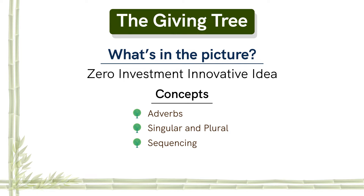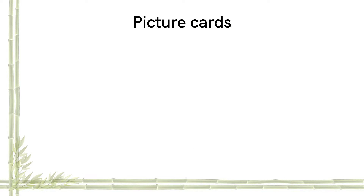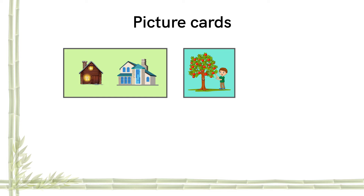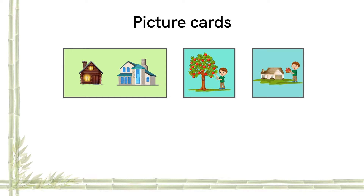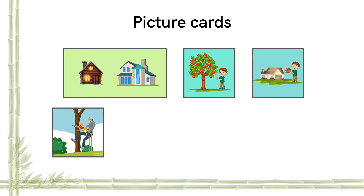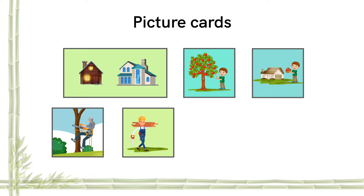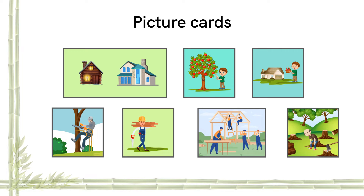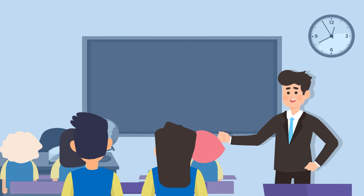The following picture cards need to be arranged before the class begins: two houses, one made with concrete and other made with wood; an apple tree and a boy, both with smiling faces; a happy boy taking apples home; a man cutting a tree; a man taking logs of wood home; a man building a house with wood; and an old man with a sad face sitting on the stump of a tree.